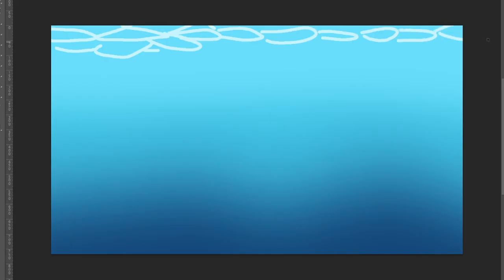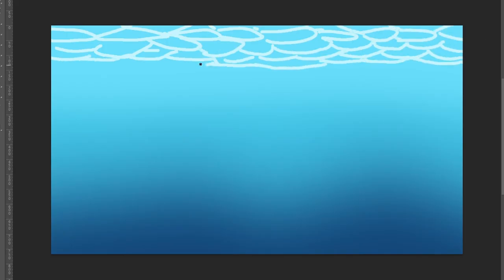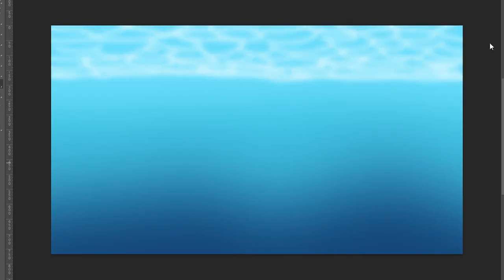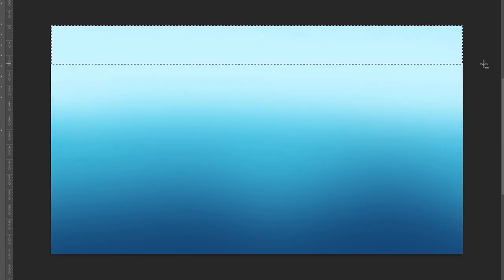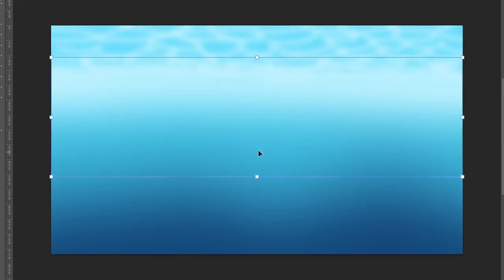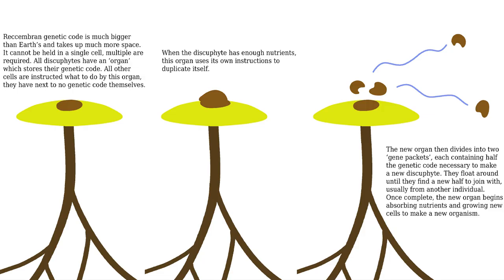A discofite's life begins when two gene packets of the opposite sex encounter each other and mix into a single individual. This new lifeform, consisting of around a dozen cells, begins absorbing nutrients found in the water around it and growing. During the entirety of the discofite's life, its new cells are always created from the original gene packet cells, meaning that it grows from its center, and even if the edges of the organism are damaged, they can always be replaced as it grows.